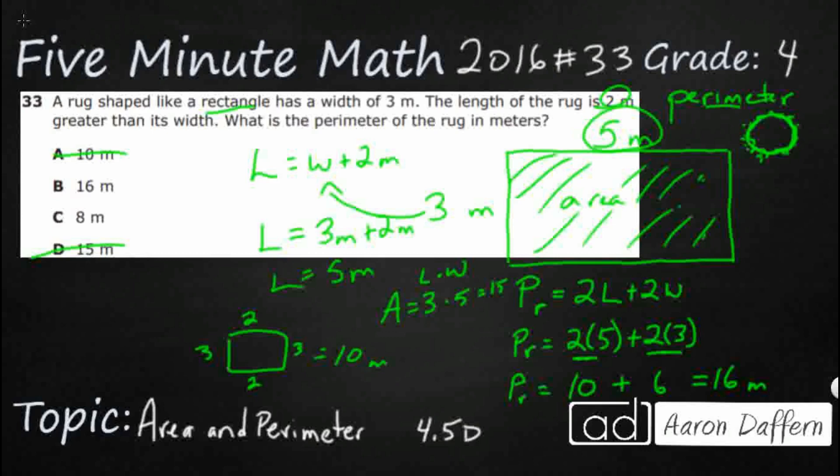Then if you just add the 5 and the 3, if you just did one set of sides rather than both sets of sides, that's where your 8 comes in. So all of those are incorrect. Our answer here is B, 16 meters.